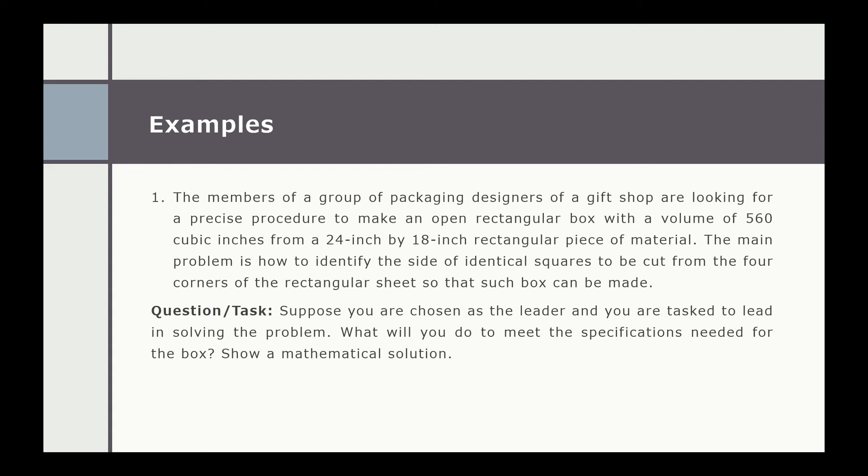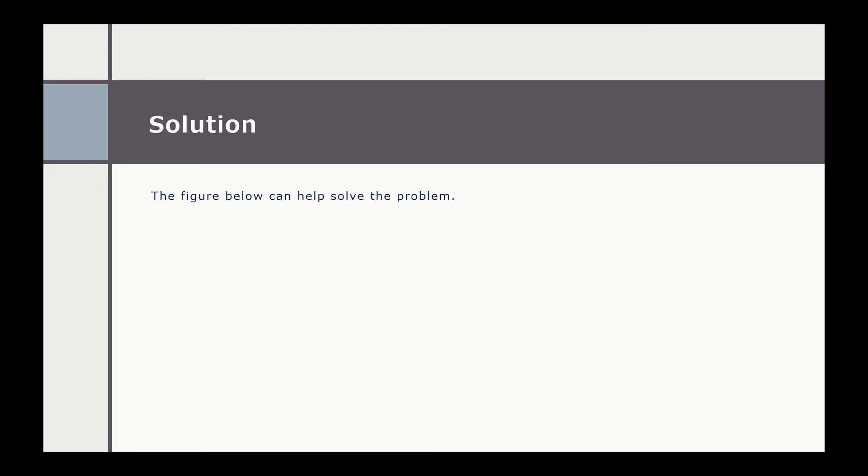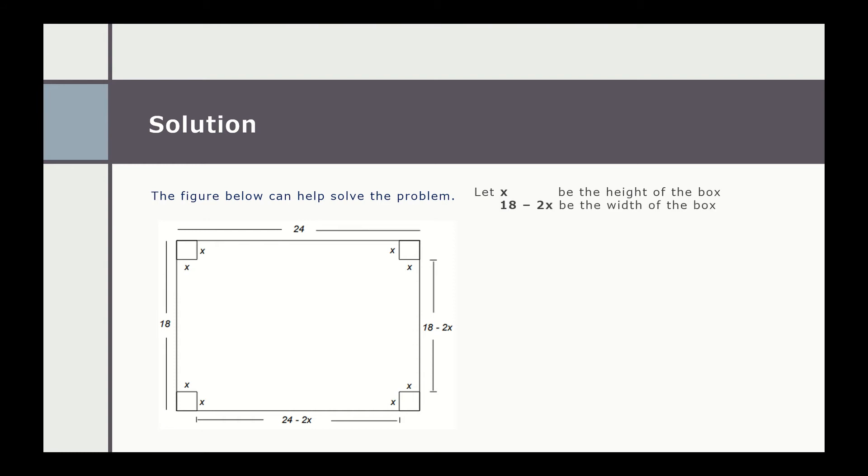The figure below can help us solve the word problem. As mentioned in the given problem, we have a 24-inch by 18-inch rectangular piece of material. Let's say that the measurement of the side of the identical squares to be cut from the four corners of the rectangular sheet is x. Therefore, if we are going to form the open rectangular box, the value of height is x, and the width of the box is 18 minus 2x, and the length of the box is 24 minus 2x.